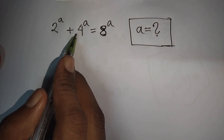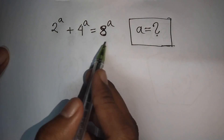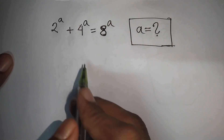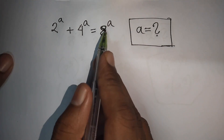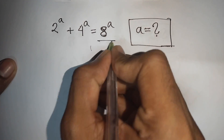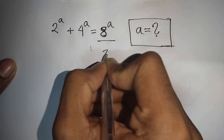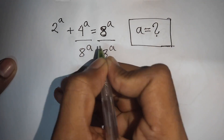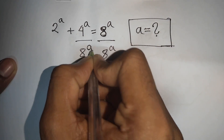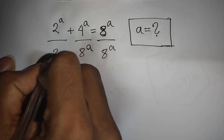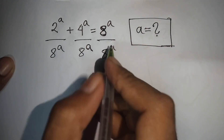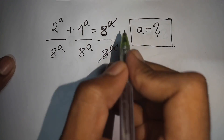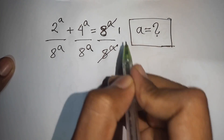2 to the power a plus 4 to the power a is equal to 8 to the power a. Find the value of a. First, we divide both sides by 8 to the power a. This 8 power on the right side will cancel, leaving 1.